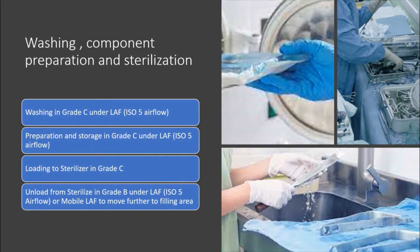For washing, component preparation, and sterilization — any components to be moved into the Grade B filling area need to be washed and handled under Grade C with laminar air flow. Compression and storage of any tools, materials, or filling apparatus also need to be done in the Grade C area under LAF.